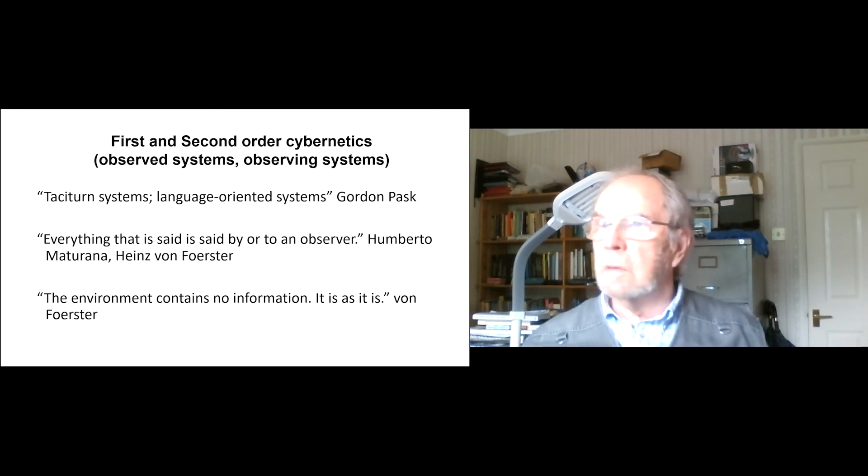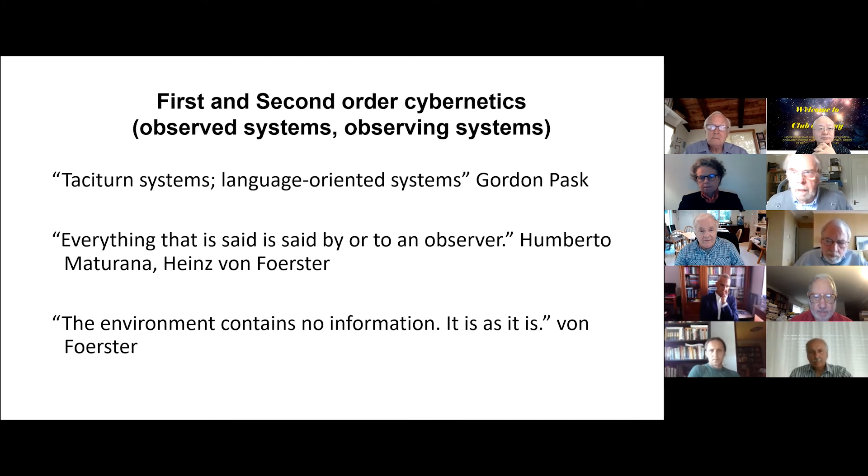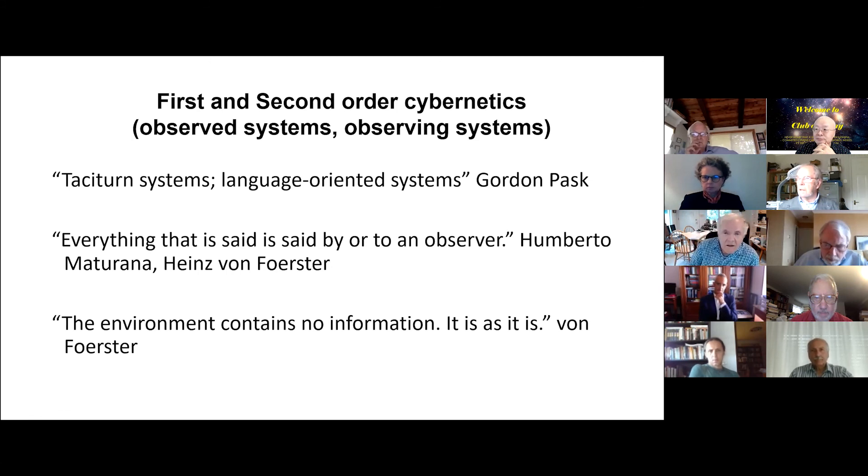This is just to remind the innocent who may not have seen this before. We have first and second order cybernetics where first order cybernetics is the subject of observed systems, second order cybernetics is the subject of observing systems. Von Foerster made this distinction in 1974, almost in a throwaway remark in the Cybernetics of Cybernetics collection. And I believe Stuart Umpleby had the honour of being the first person to write any commentary about second order cybernetics. But some years later, von Foerster noted that prior to him in 1969, Gordon Pask had made a distinction between taciturn systems, which are basically systems we observe as observed systems, taciturn, they don't speak, and language-oriented systems, systems with whom we have conversations.